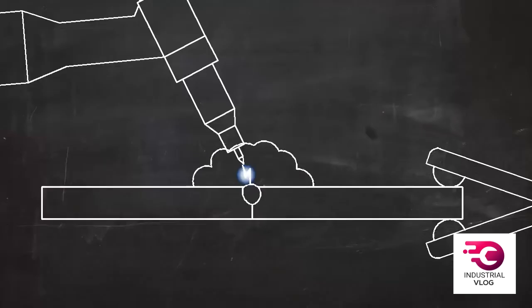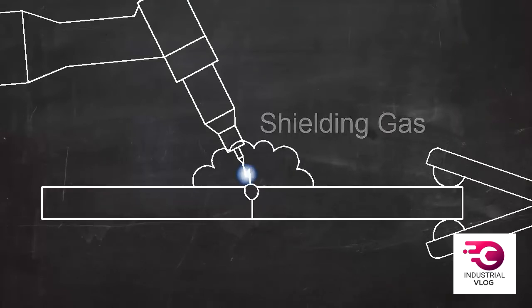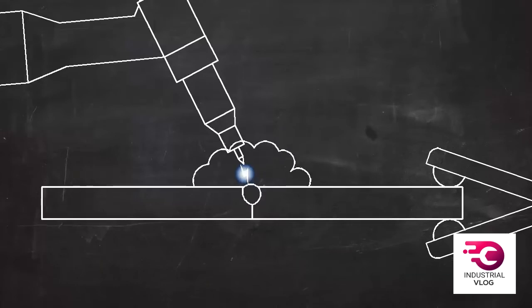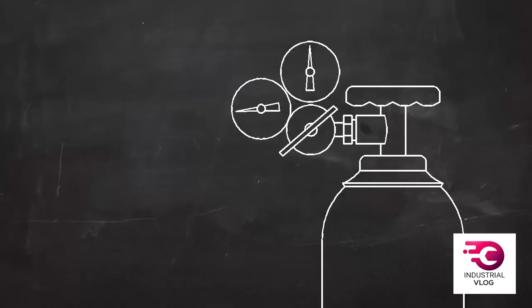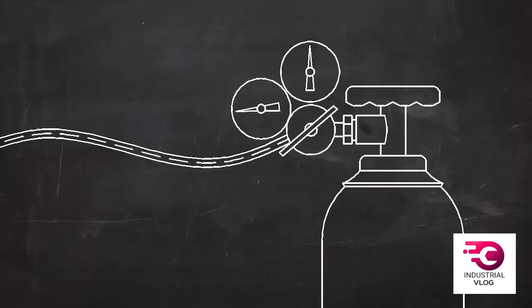In TIG welding, the molten metal is protected by a shielding gas. This gas, usually argon and sometimes helium or other gases, keeps the molten metal from reacting with oxygen and water vapor in the atmosphere. This shielding gas is stored in high-pressure cylinders. The pressure is reduced to a usable level by a device called a regulator. The shielding gas flows through a hose and comes out right at the point of the weld.